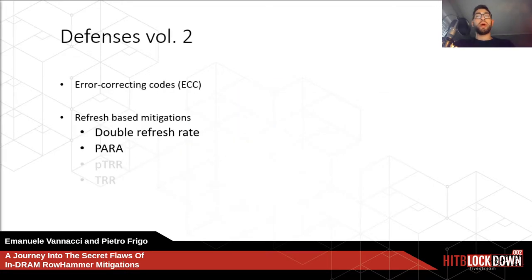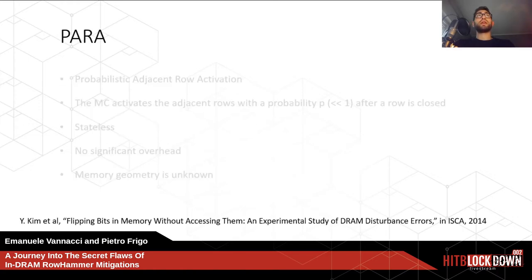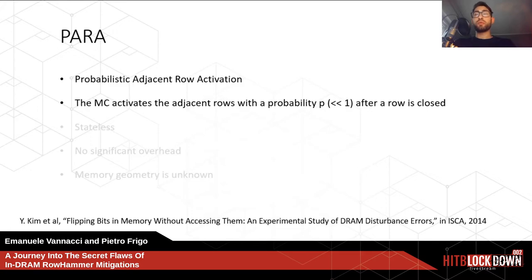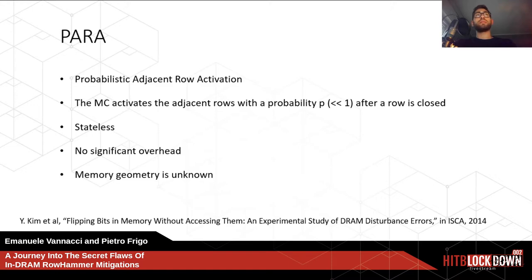Another solution is PARA — Probabilistic Adjacent Row Activation. PARA tries to reduce the number of refreshes required by defining a probability parameter P. Every time a row is activated and closed, with probability P the adjacent rows are also activated. The main advantage of PARA is that it is stateless, meaning no counters or data structures are needed, keeping overhead very low. However, the main disadvantage is that the memory controller has no knowledge of the memory geometry required to correctly identify adjacent rows.